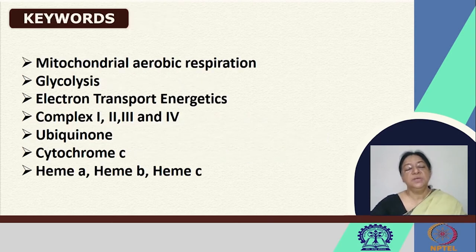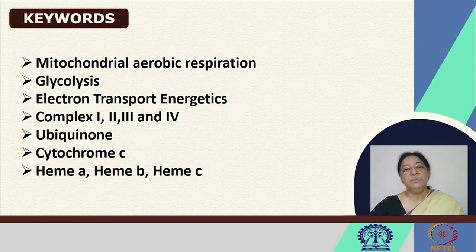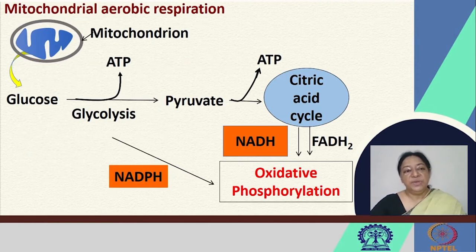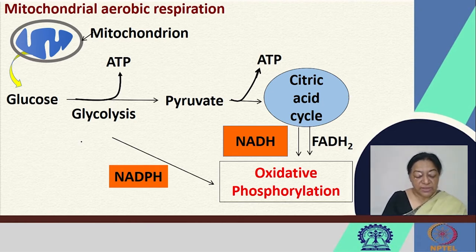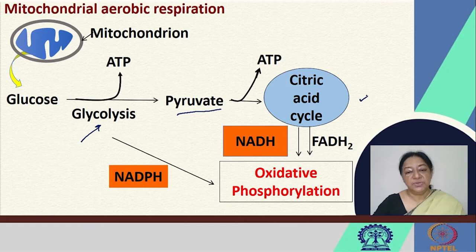The importance of mitochondrial aerobic respiration is evident from the fact that it is a life process necessary throughout. It involves several complexes that are proteins present in the membrane. In mitochondrial aerobic respiration, we have the process of glycolysis that occurs in the cytoplasm, the pyruvate that is transferred into the mitochondria, the citric acid cycle that occurs in the mitochondria, followed by this important step of oxidative phosphorylation.